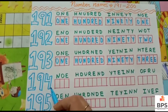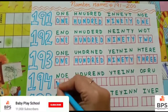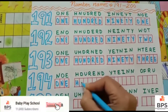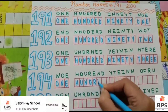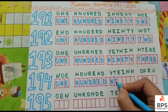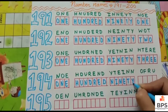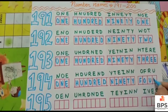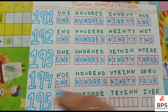194. O-N-E, 1, H-U-N-D-R-E-D, 100, N-I-N-E-T-Y, 90, F-O-U-R, 4. One hundred ninety-four — 194.